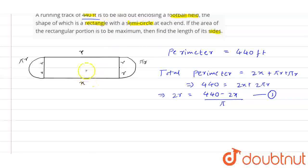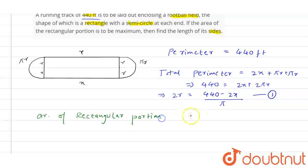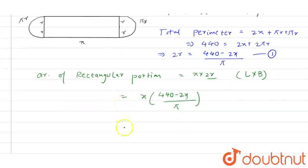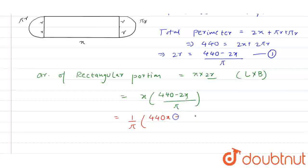Now, if we find the area of this rectangle — the area of the rectangular portion — which is X into 2R, equal to length into breadth. If we put the value of 2R from equation 1, we can say that A = X · (440 − 2X) / π, which gives us (1/π)(440X − 2X²).